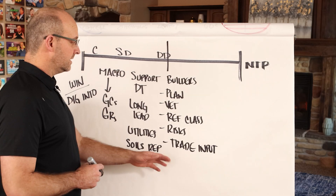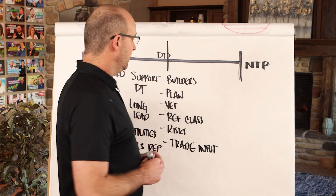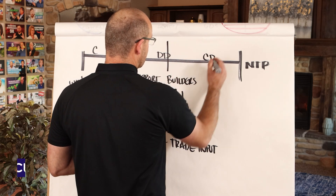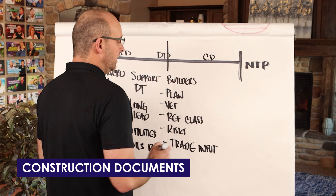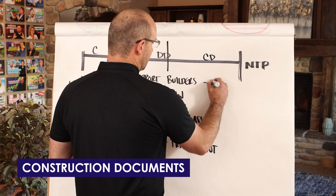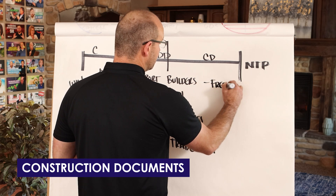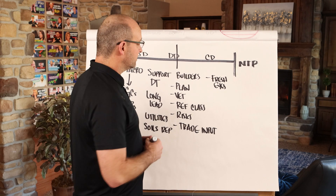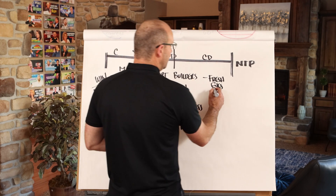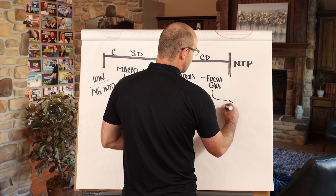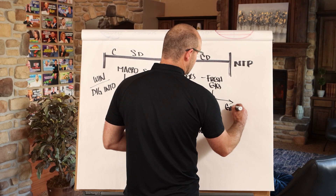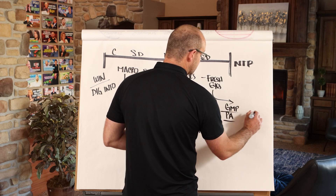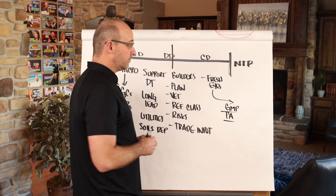If you have early design-assist trade partners, design development is the phase where you engage them. Then when you're in the CD phase, you'll want to conduct what's called a fresh eyes meeting — to tear apart your plan and make sure it's accurate — so you can submit and get your GMP approved and potentially include these deliverables in the prime agreement.